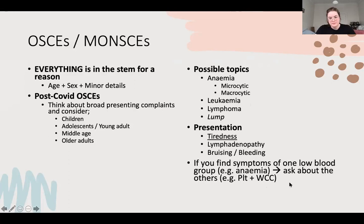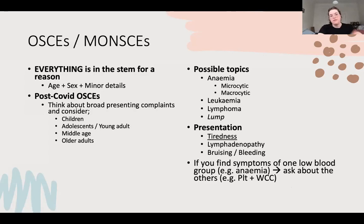The main takeaway for heme is that if you find any symptoms of a low blood group - so low red blood cells being anemia - you have to ask about the other two, because if you think it's just an iron deficiency anemia and you've missed the fact that it's actually a pancytopenia with low platelets and white cells, you're missing leukemia - something bad.